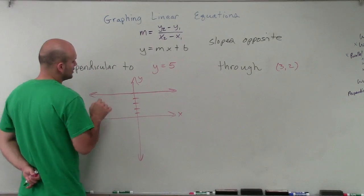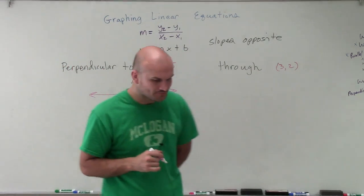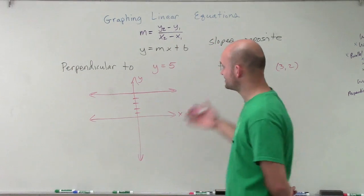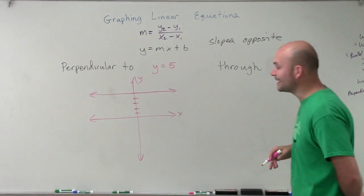So remember, when we learned how to graph with the table, we could see that y equals 5 is going to produce a horizontal line.